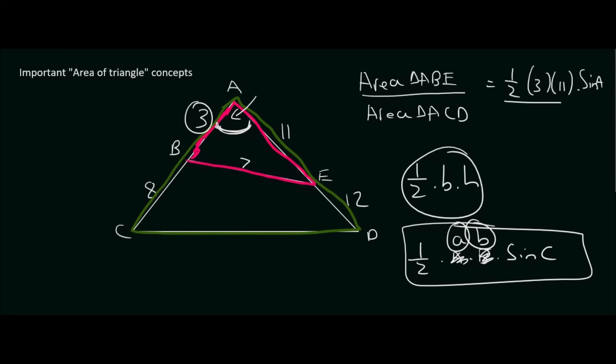Then, for triangle ACD, which is the green one, I'll say half, then its length is going to be 11, and then 11 plus 12 is 23. But it also uses angle A as its central angle, so that's an A. Then look what happens.